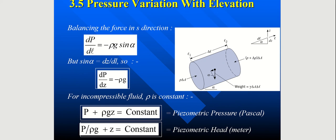So pressure variation with elevation. So what is elevation? So basically elevation is the vertical distance or vertical height from a certain datum or reference point. So elevation can be positive or negative.